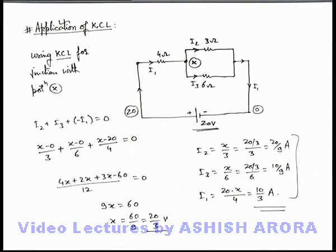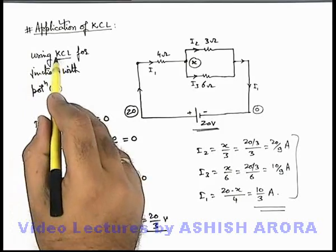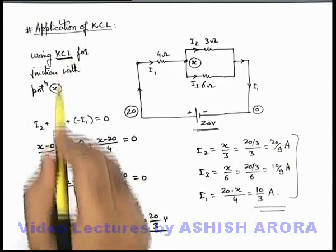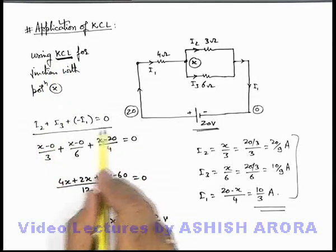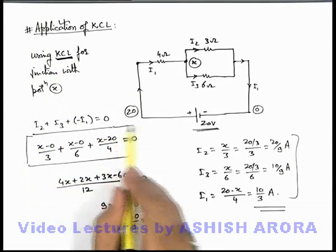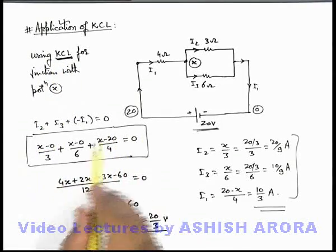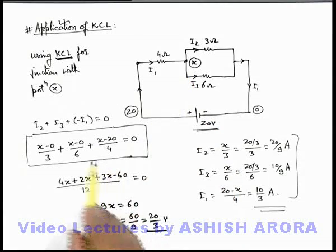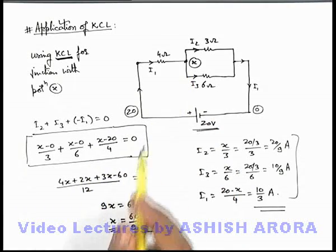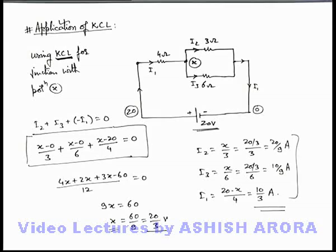This is how we apply Kirchhoff's Current Law in a circuit. At any junction where the potential is unknown, we write the KCL equation, solve it, and get the unknown potential at the junction.